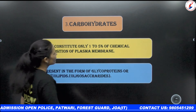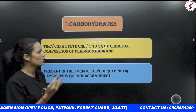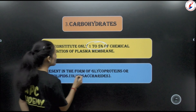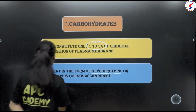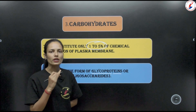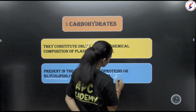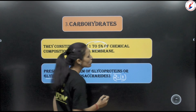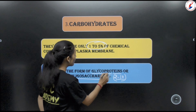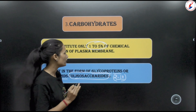The next component is carbohydrates, which form only 1 to 5% of the plasma membrane. They exist in the form of glycoproteins and glycolipids, mainly as oligosaccharides. Oligosaccharides means 2 to 10 monosaccharides joined together — this is a limited number, different from polysaccharides.